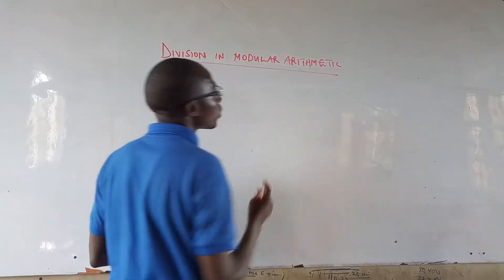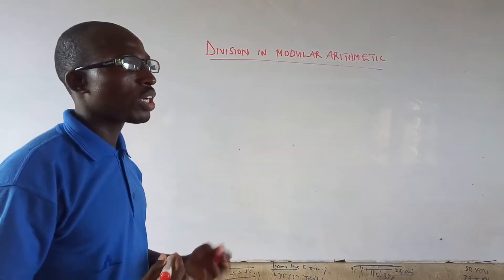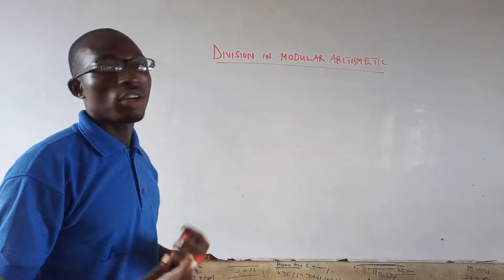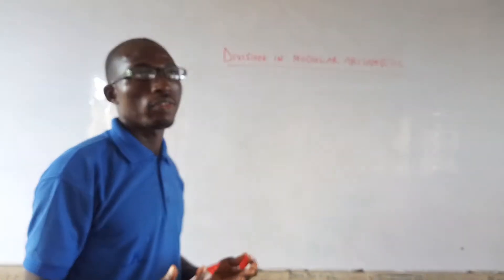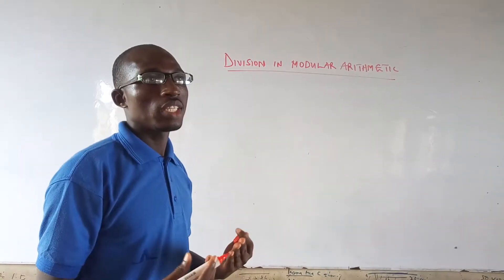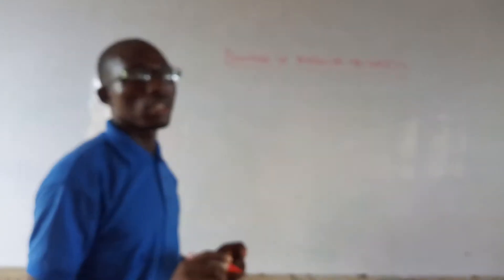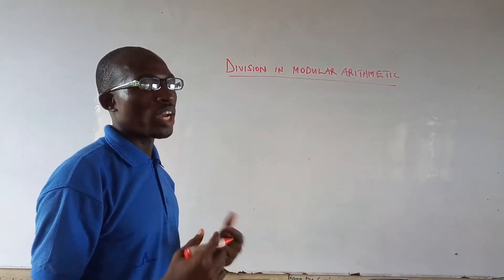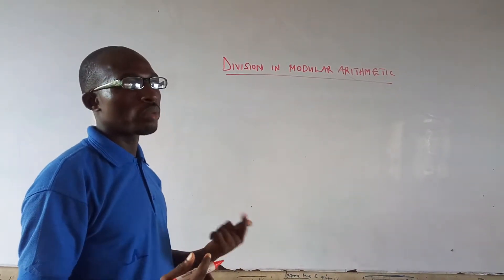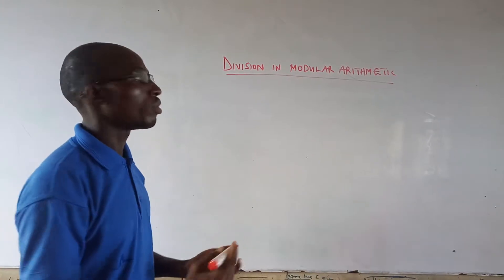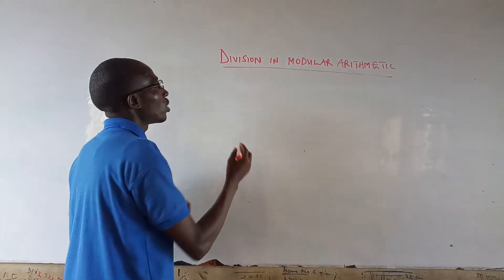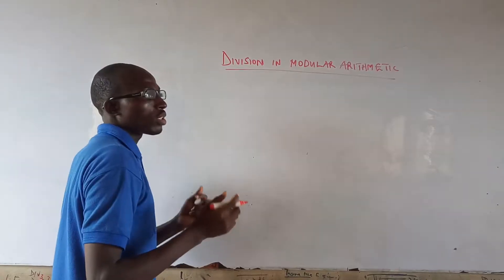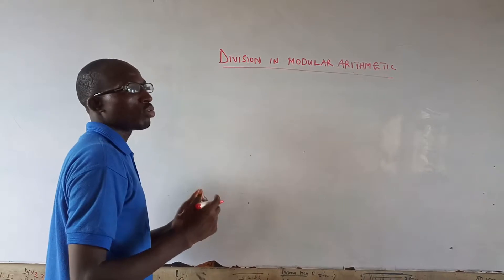In division in modular arithmetic, we are trying to incorporate the operation of division. When we have this division operation, how do we go about solving a problem? This relates to forming an equation in a modular form.